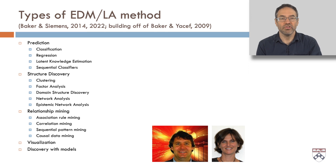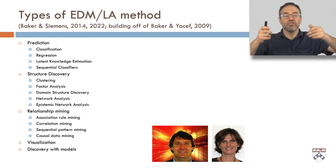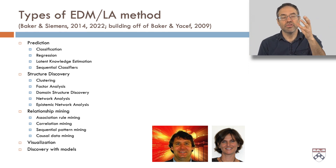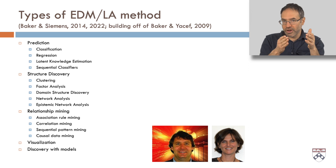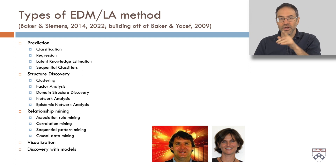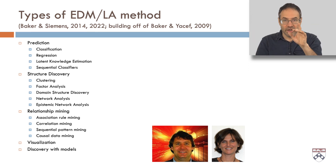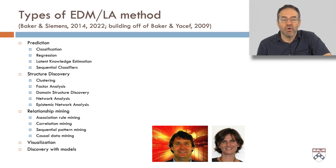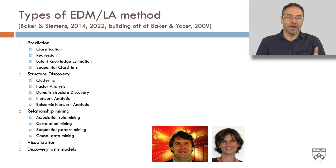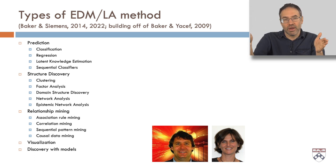A third big category is relationship mining — trying to find the relationship between variables. This includes association rule mining, probably the most classic form in data science, which involves figuring out if-then rules from data — not necessarily causal ones. That's seen in causal data mining, a different category. It also includes correlation mining, looking for variables that correlate to each other in large sets of data, and sequential pattern mining, which tries to find rules that apply over time.